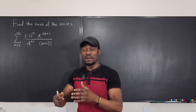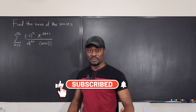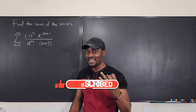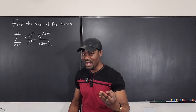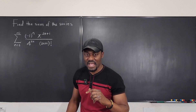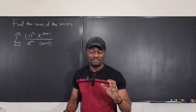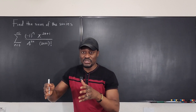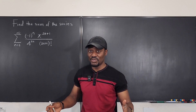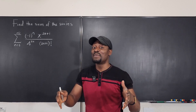Whenever you get a formula like this and you're asked to find the sum of the series, it's because you're expected to recall some of the standard Taylor series expressions for popular functions. The most popular ones are e to the x, sine of x, cosine of x, and sometimes 1 over (1 minus x) or arctan(x). You have to know these as a calculus student.